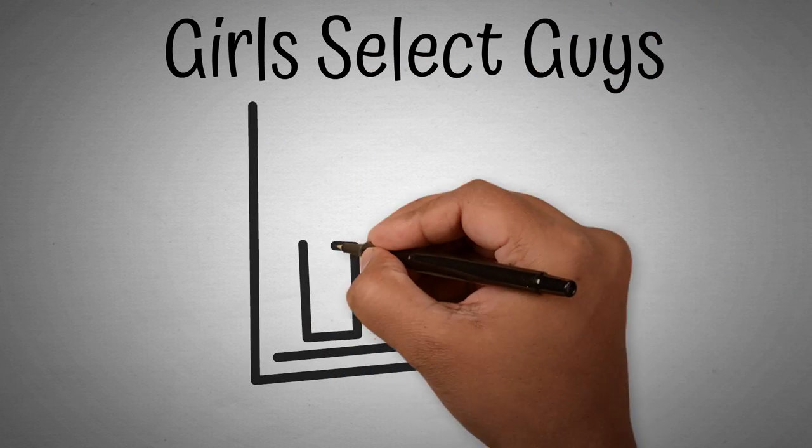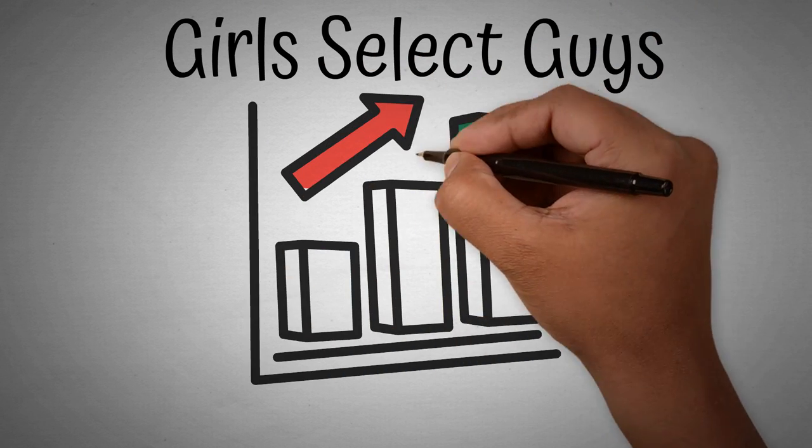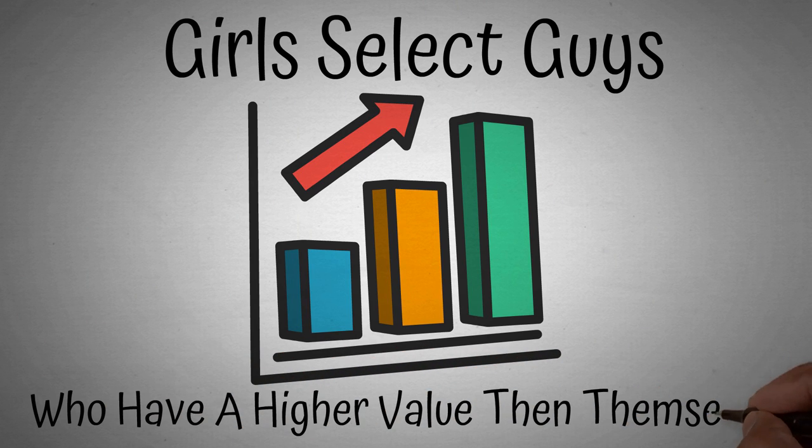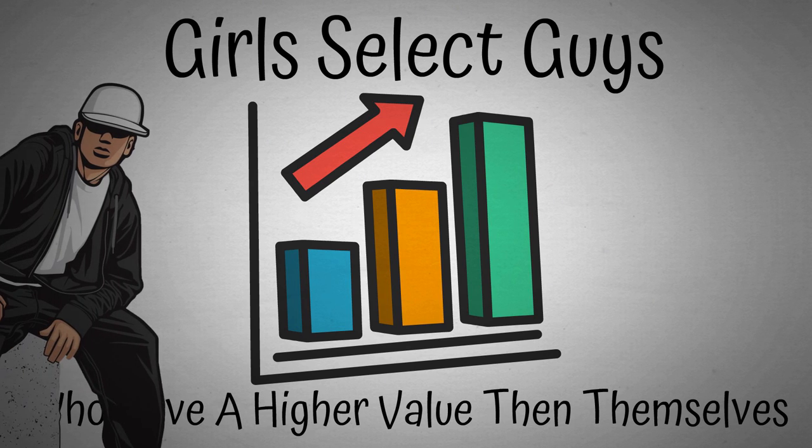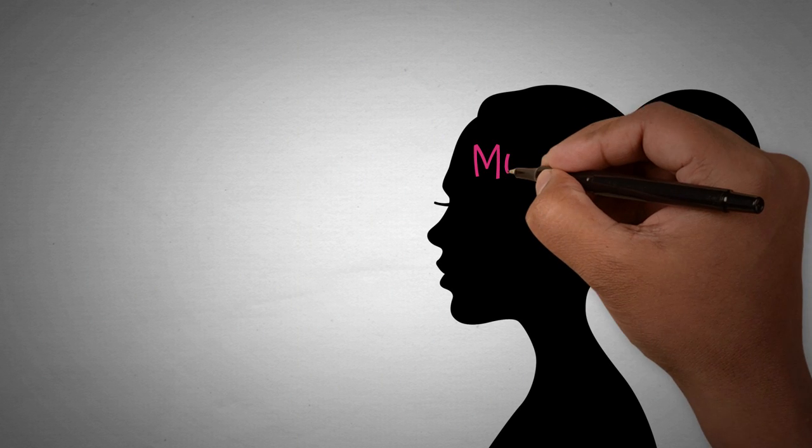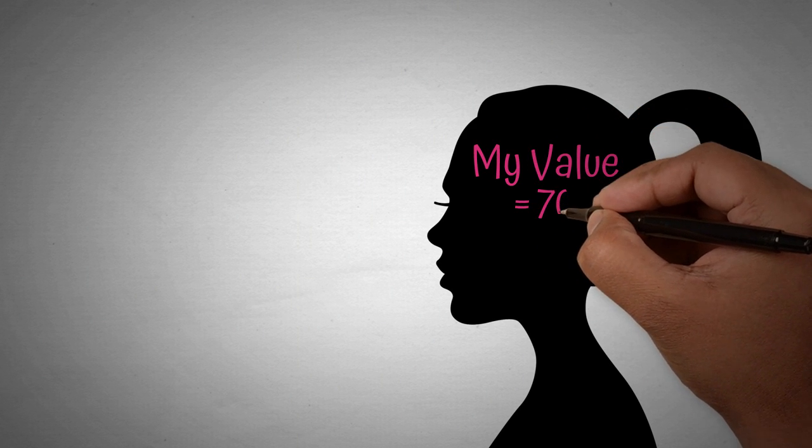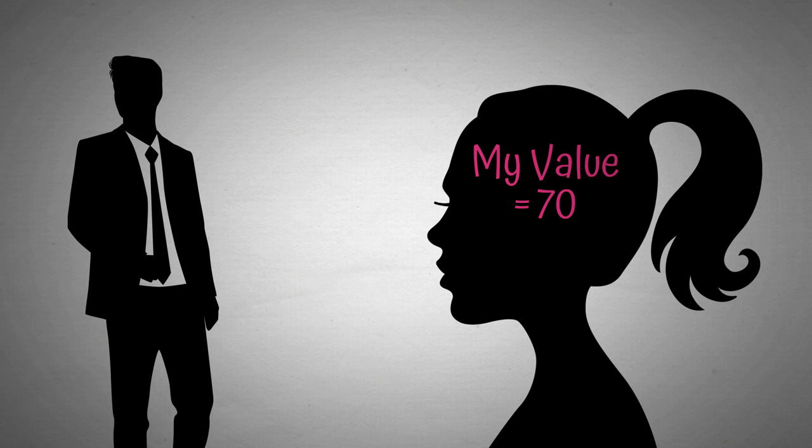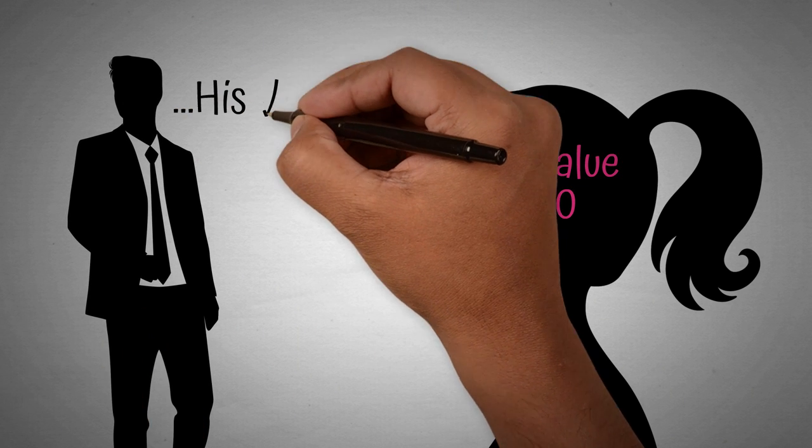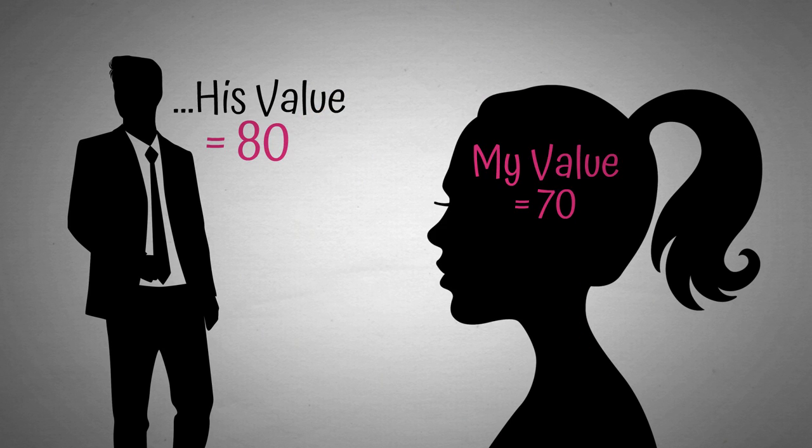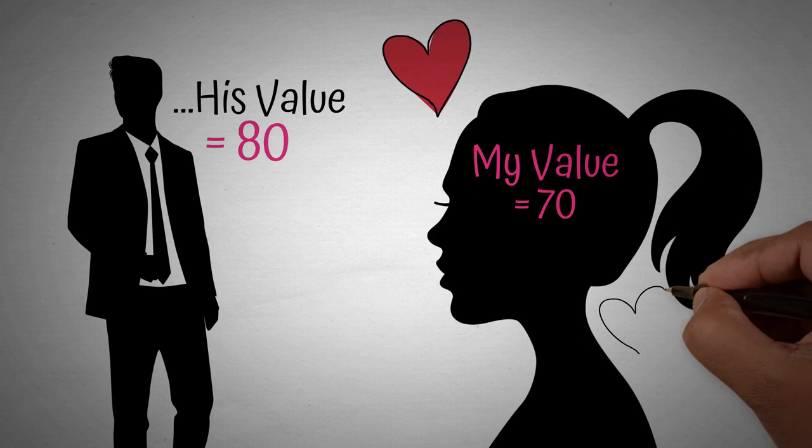The real reason why girls go for jerks is because girls tend to look for mates who have a higher status or a higher value than themselves. When a man behaves like a jerk, what he is really doing is implying that he has value and girls love a man with value. Every girl on the planet has an idea of what her net value is as a person and when she is looking for a man, she will roughly compute her own value against what she perceives the man's value to be and if the man's value is computed as being higher than her own, then she is far more likely to feel attraction towards him.